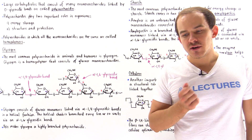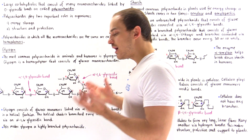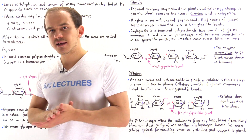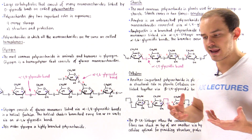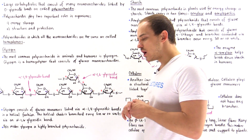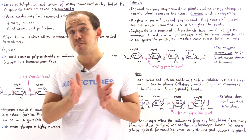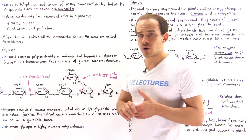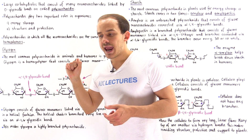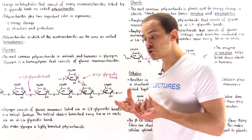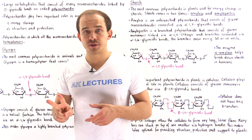So far we discussed monosaccharides and disaccharides. Now let's move on and talk about polysaccharides. What exactly is a polysaccharide and what's the purpose of polysaccharides in nature? A polysaccharide is basically a very large carbohydrate that consists of many individual monosaccharides which are connected by O-glycosidic bonds. Organisms in nature, including our own cells, use polysaccharides for one of two purposes.